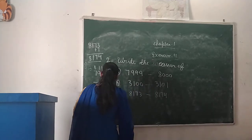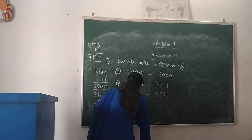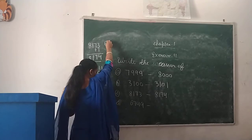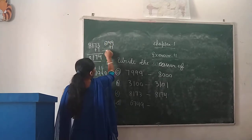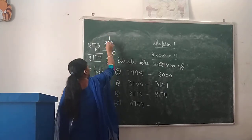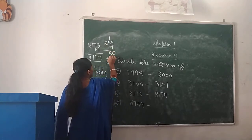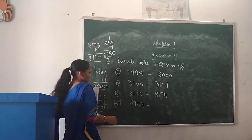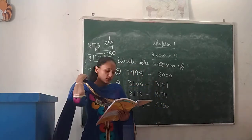Next, Part D: 6,749. We will add 1. 9 plus 1 is 10, write 0 and carry 1. 4 plus 1 is 5. 7 stays 7. 6 stays 6. So the successor is 6,750.